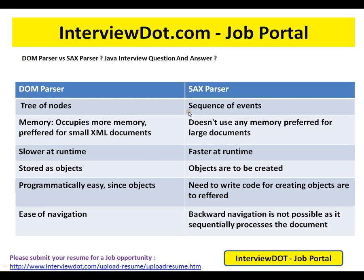SAX parser is mostly used in the market because of its advantages. DOM uses a tree of nodes, while SAX uses a sequence of events. DOM occupies more memory and is preferred for small XML documents, because the entire file is loaded immediately. SAX does not use much memory and is preferred for larger documents.